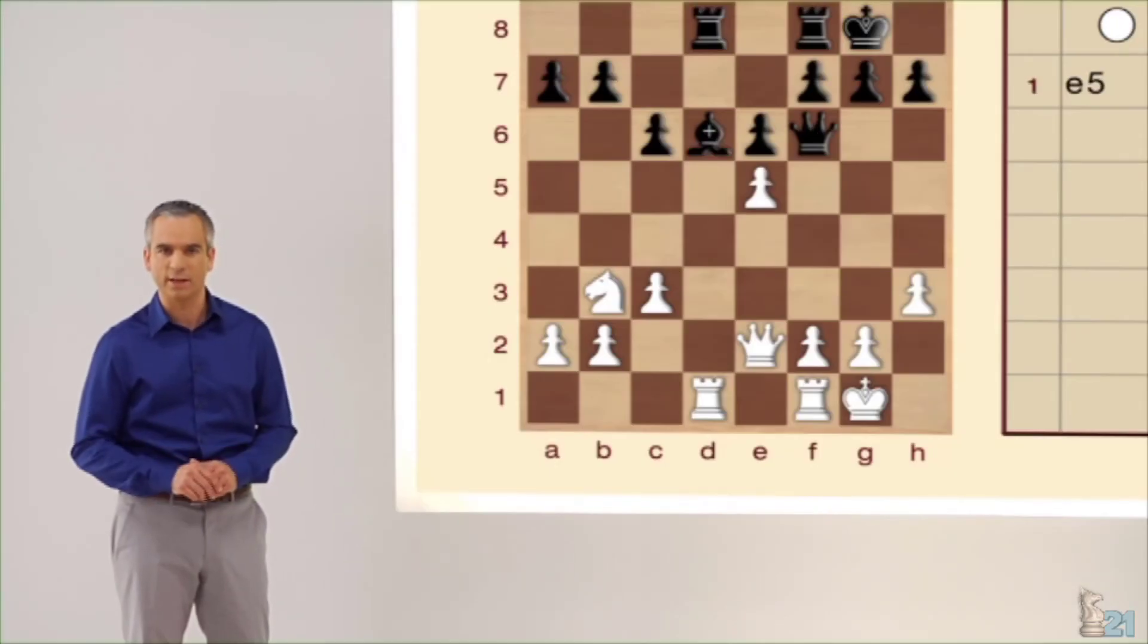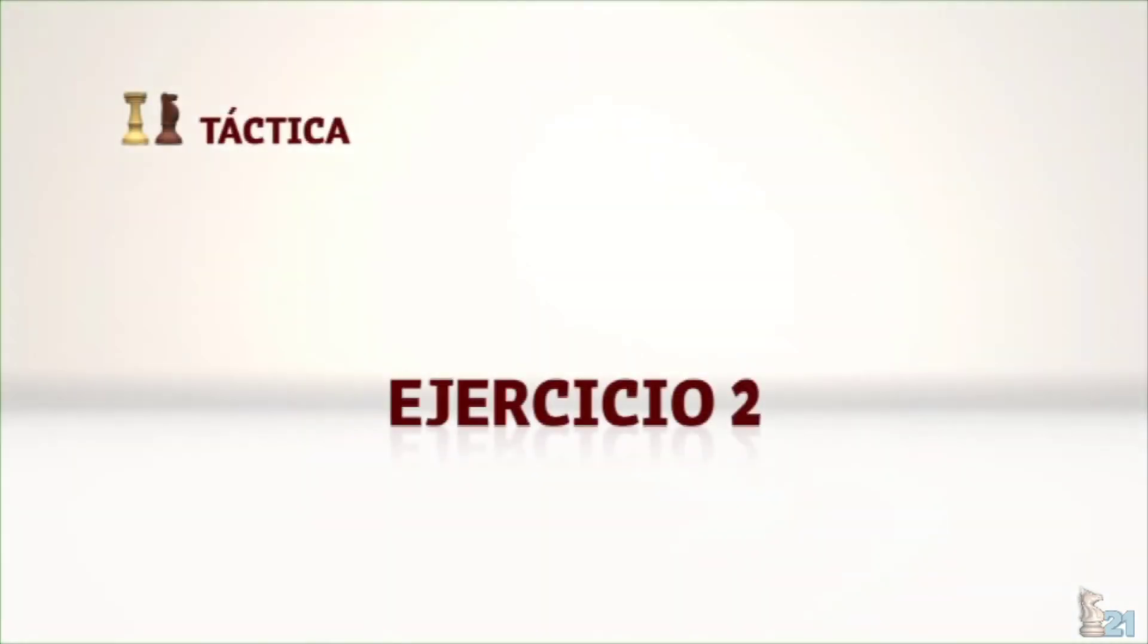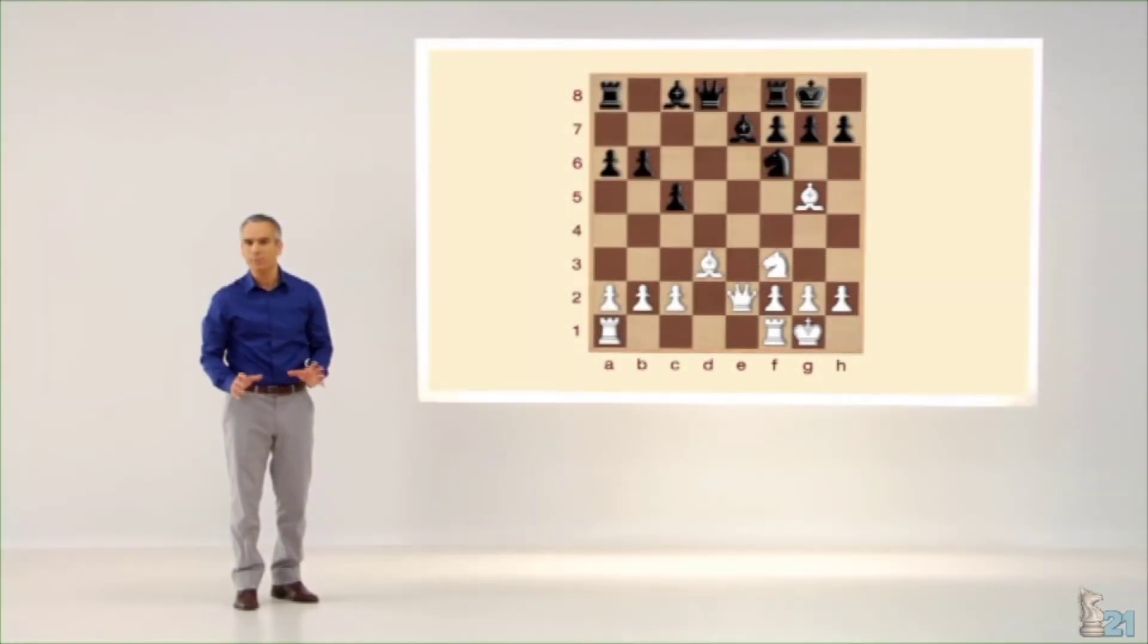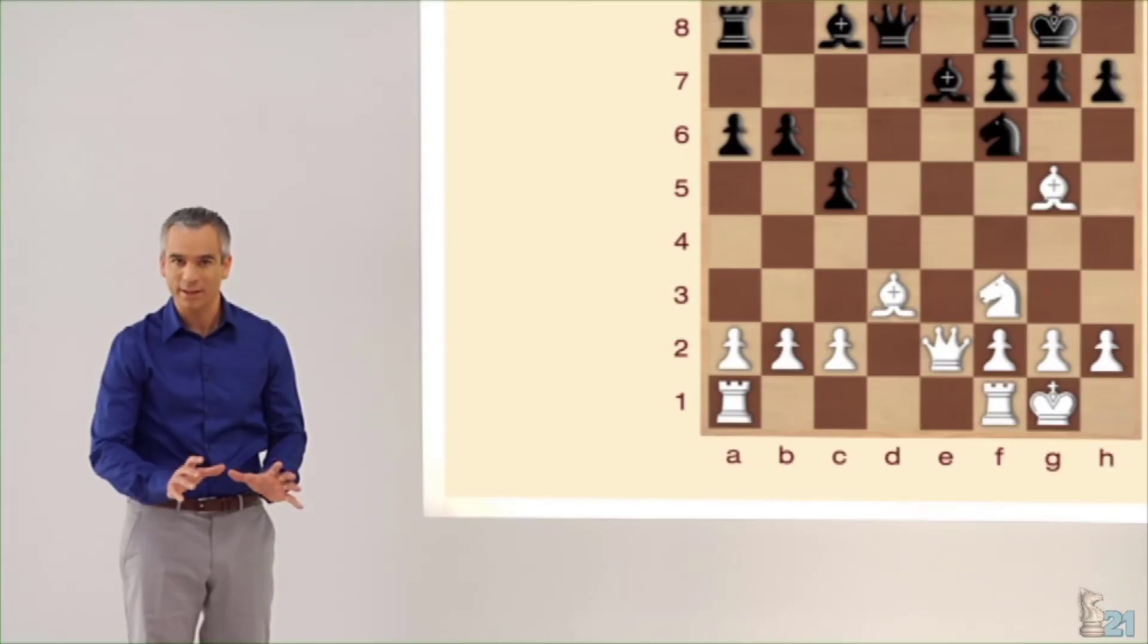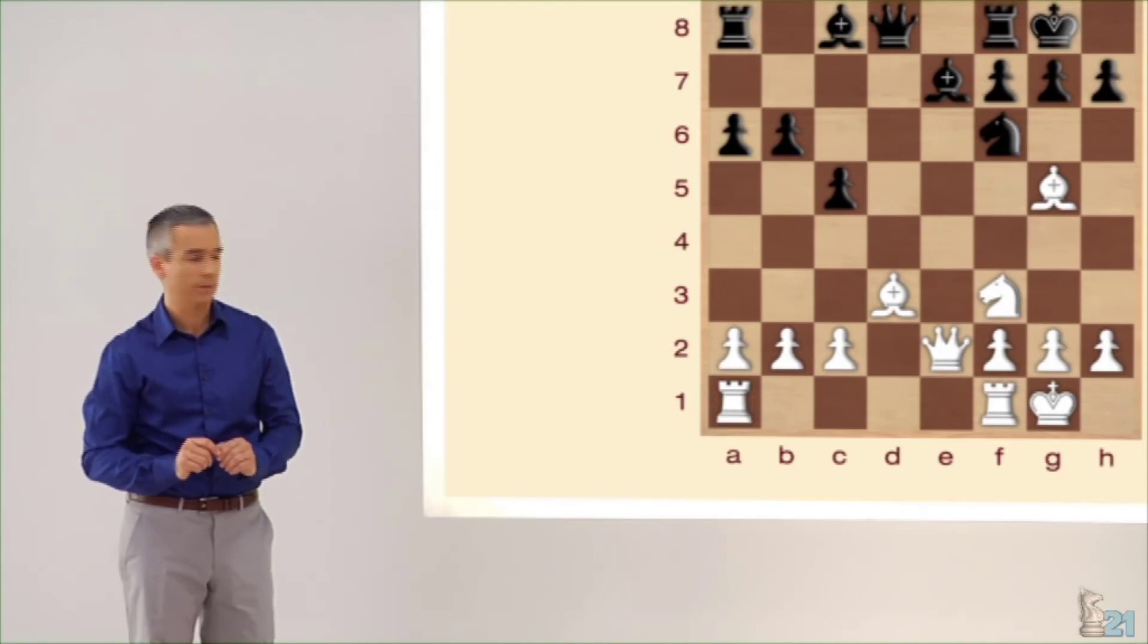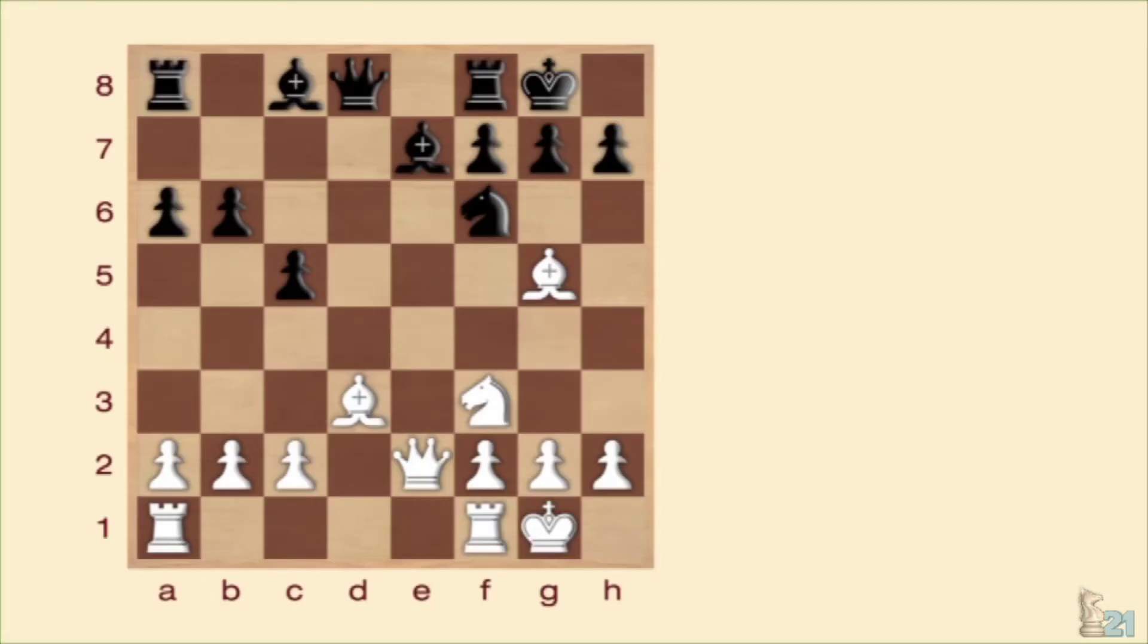Pasemos al siguiente ejercicio. Juegan blancas y pueden ganar material. ¿De qué manera? Este ejercicio es más difícil que el anterior, así que estad muy atentos. De nuevo tenéis de 2 a 10 minutos para resolverlo. Relojes en marcha.